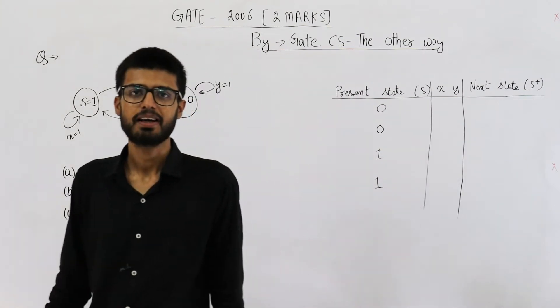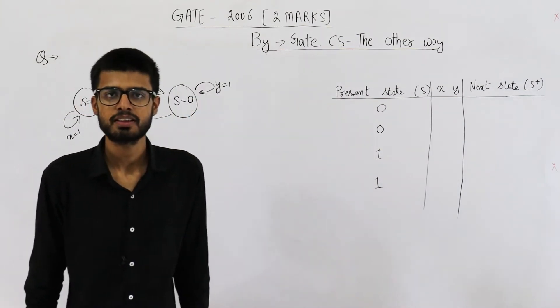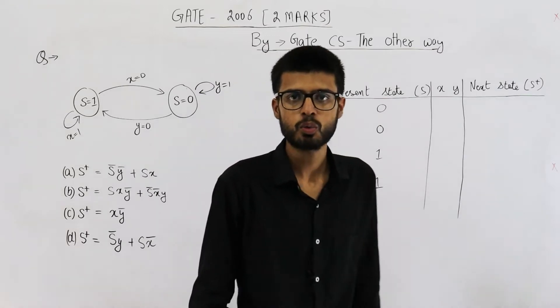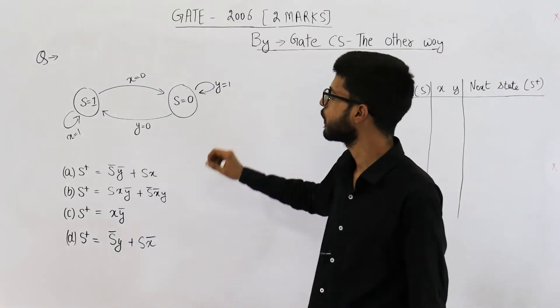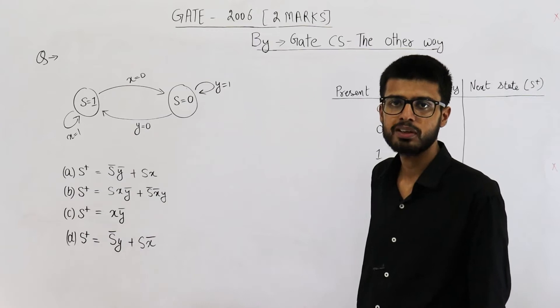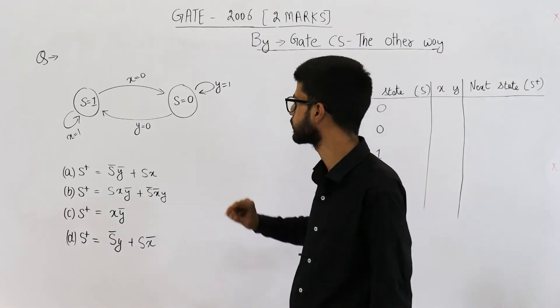Hello students, welcome back. The question is from GATE 2006 exam. This one is for two marks. They have given you this finite state machine and we are required to determine the expression for next state.